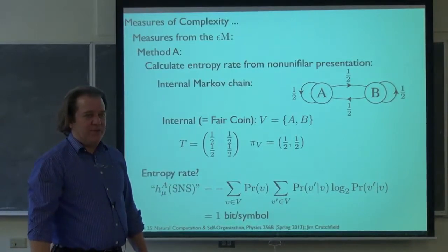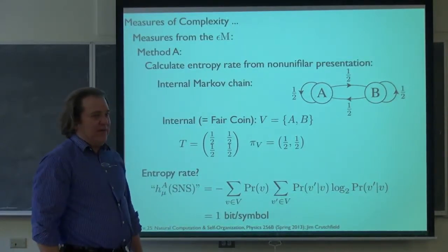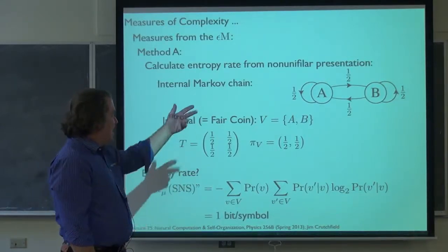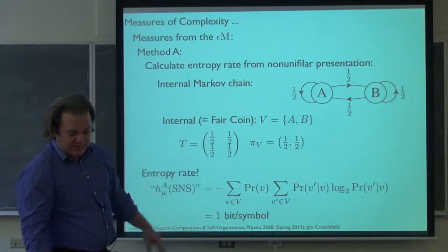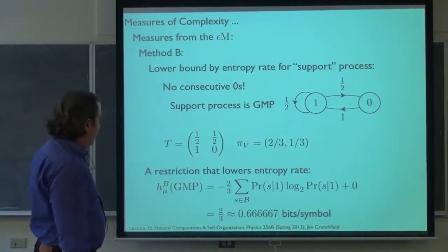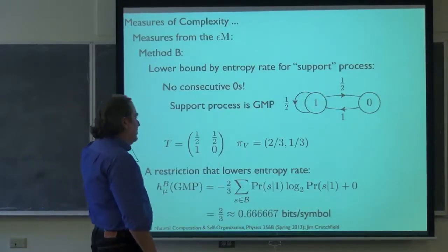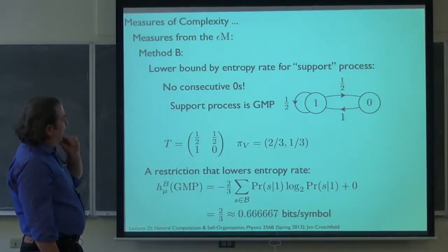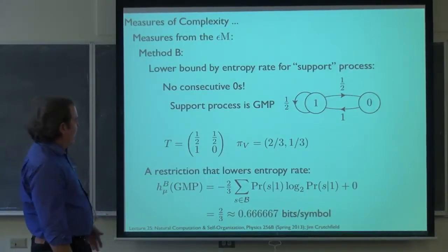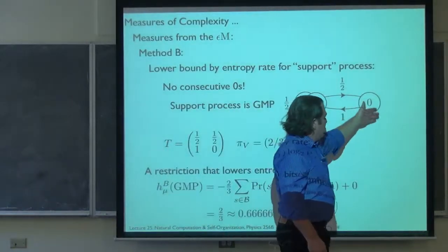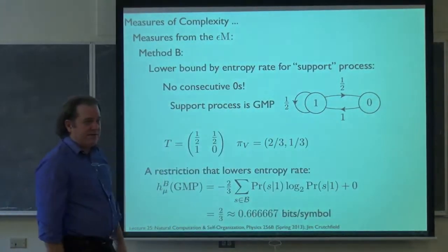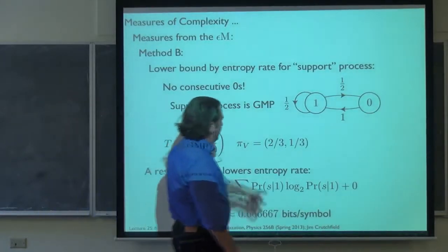That should strike you as a pretty bad approximation. Why? Because I know there's a restriction in the observed sequence — no consecutive zeros — that's not captured here. All sequences can occur; it's basically a fair coin. Method B says: it's pretty clear from just looking at the original two-state non-unifilar presentation that there is some restriction in the observed sequences — I don't see consecutive zeros. So I can write down a Markov chain that describes that restriction and calculate its entropy rate.